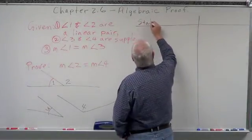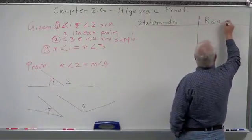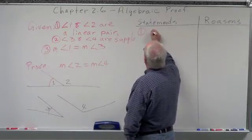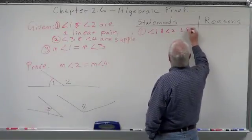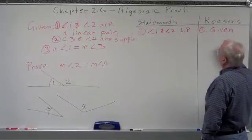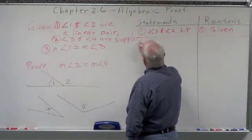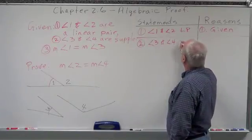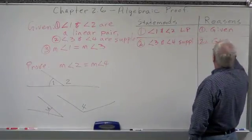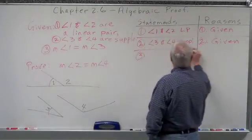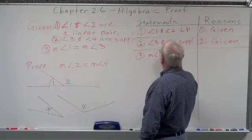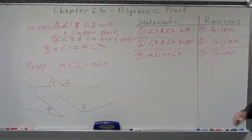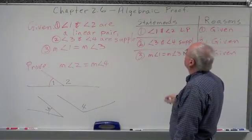We're going to have statements over here and reasons over here. Statement 1: angle 1 and angle 2 are a linear pair. Reason: given — they told us. Statement 2: angle 3 and angle 4 are supplementary. Reason: given. Statement 3: measurement of angle 1 equals measurement of angle 3. Reason: given.